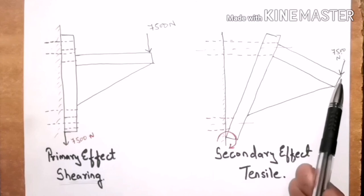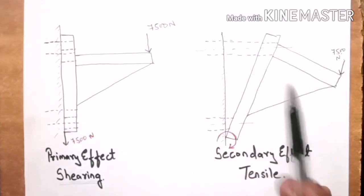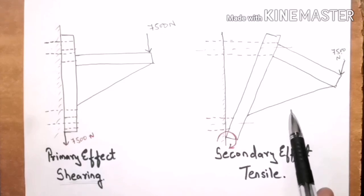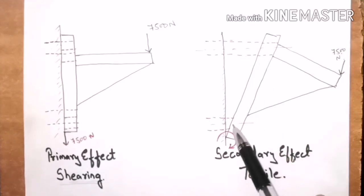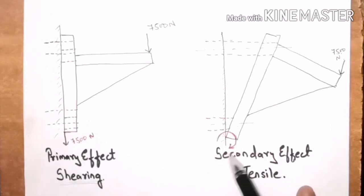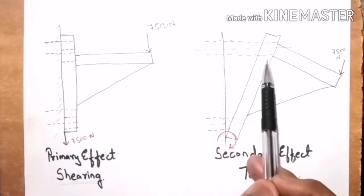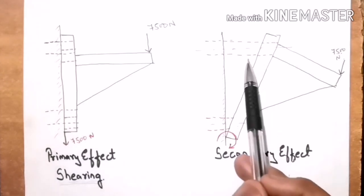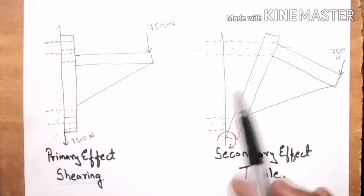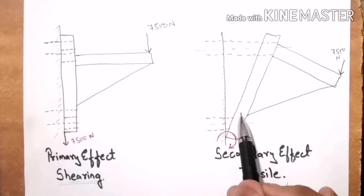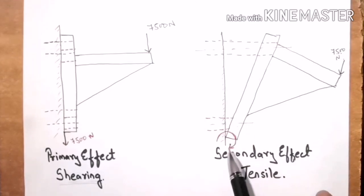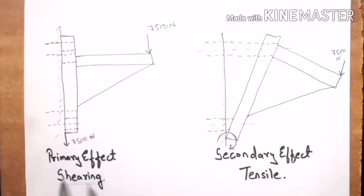This load W will also tend to rotate the entire assembly in the clockwise direction. Because of this rotation there will be some effect on the bolts, known as the secondary effect. Due to this rotation, the bolts are getting elongated, meaning a tensile load is being experienced by the bolts. So the secondary effect of the load is tensile. In summary, when the load is perpendicular to the axis of the bolt, the primary effect is shearing whereas the secondary effect is tensile.